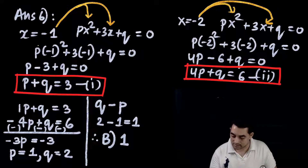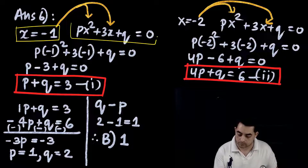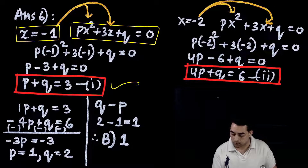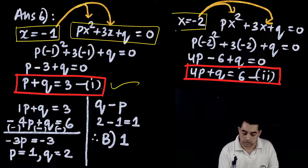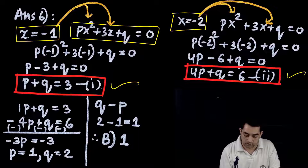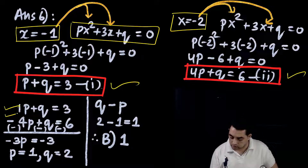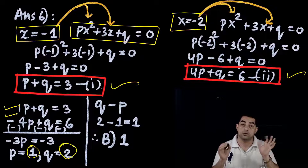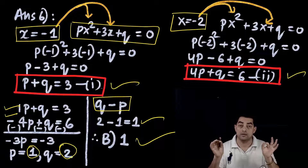Substituting x = -1: we get equation p + q = 3 (equation 1). Substituting x = -2: we get 4p + q = 6 (equation 2). Solving these simultaneously, p = 1 and q = 2. Therefore q - p = 2 - 1 = 1. The correct answer is option B: 1.